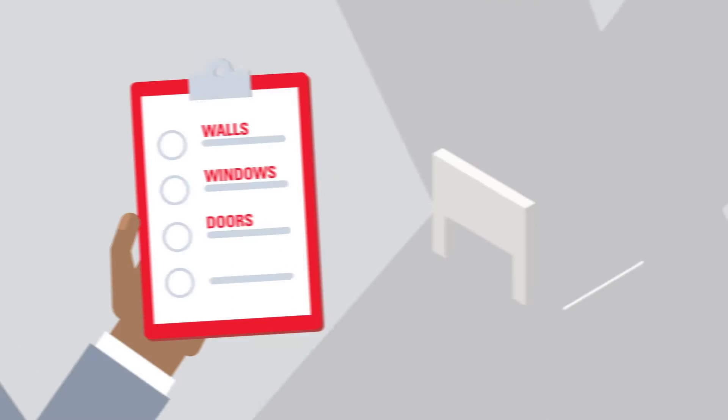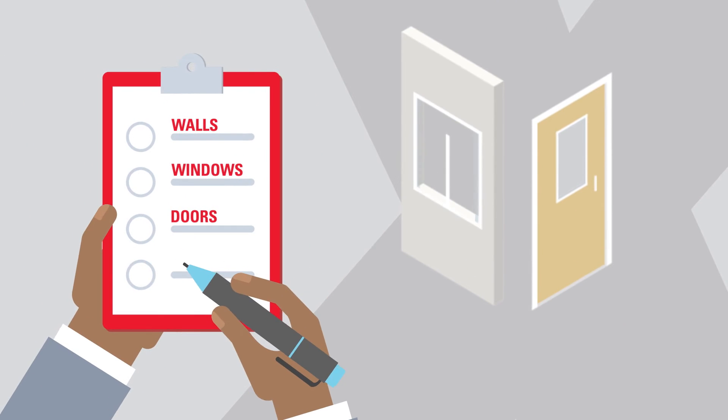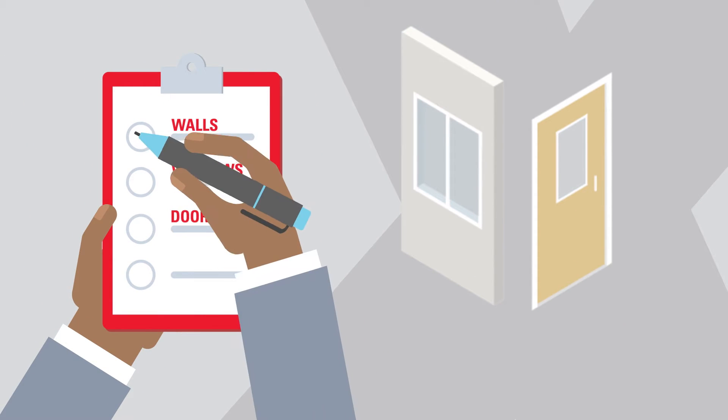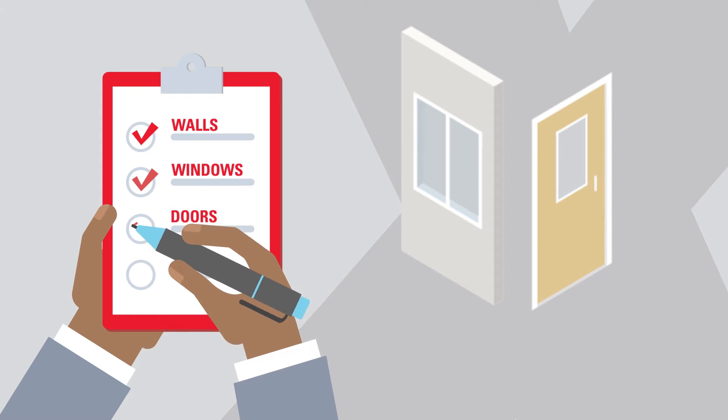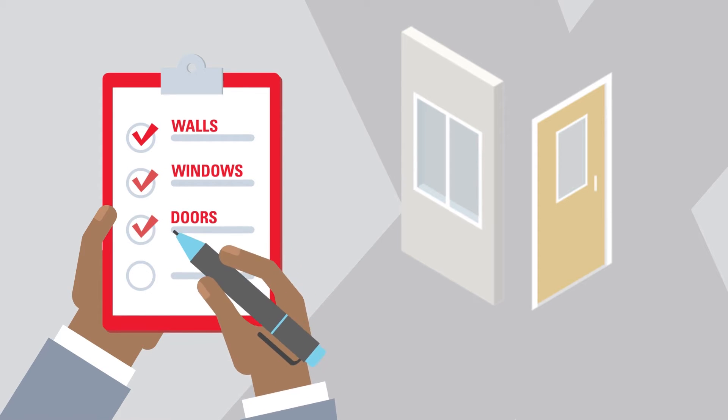We recommend using the tool on areas most commonly prone to energy loss, such as the seams of your walls, windows, and doors.